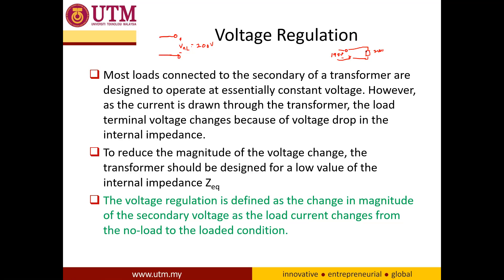Usually the load requires 200 volts to operate. But when you connect this load, there is a voltage drop because this transformer has an internal resistance in the core. Before this, there was a resistor, but since the current was zero, there was no voltage drop or losses at that part. But when you connect a load that requires 200 volts and current is drawn, there is a voltage drop across the internal resistance of the transformer. That's why the load terminal voltage drops from 200 to 197 volts, for example.